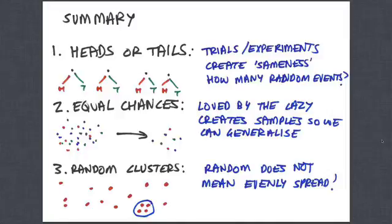The second broader randomisation approach is what I call the equal chances approach. You have a big population. You can't be bothered or you don't have the money or you're too lazy to look at everybody. So you want to look at a subset of the population. It's loved by the lazy and we create samples so that we can generalise from our sample back to the population. And the point here is that through random selection from the population, everybody has an equal chance of being in the group. And so you allow that generalisation to happen.